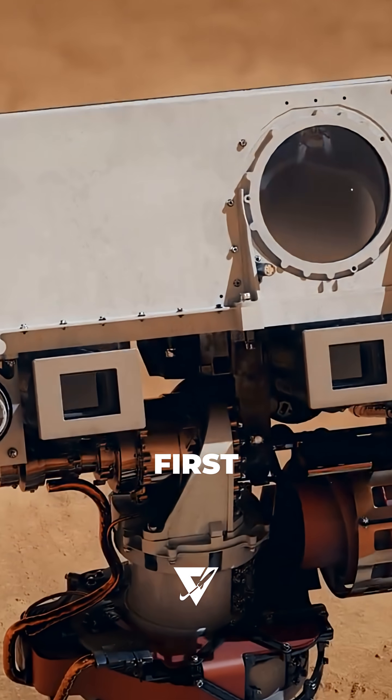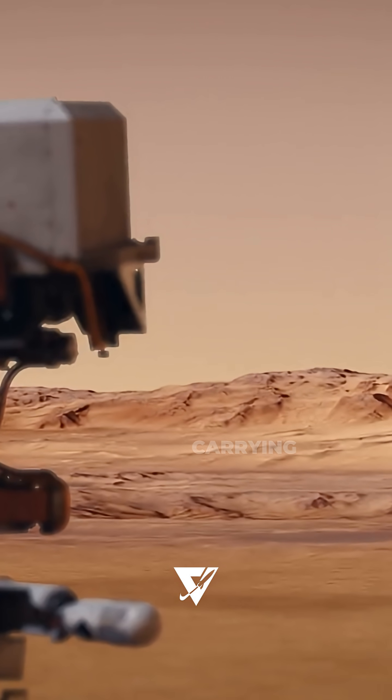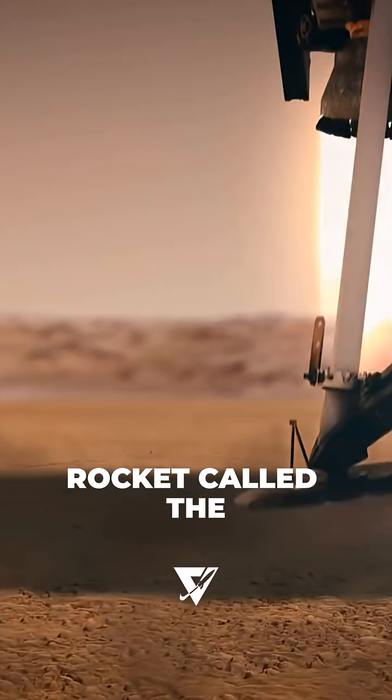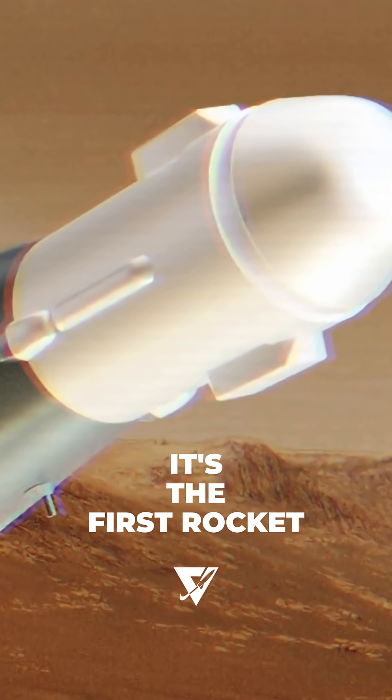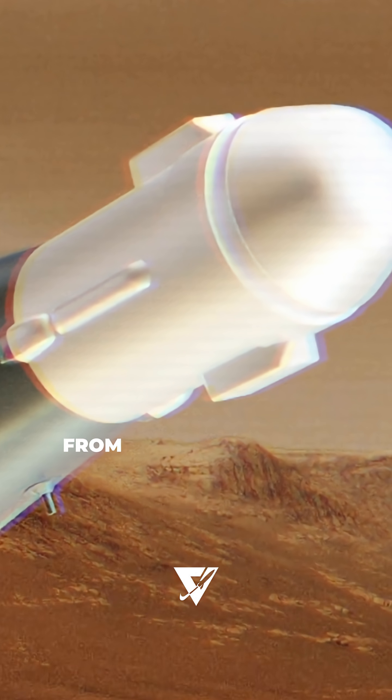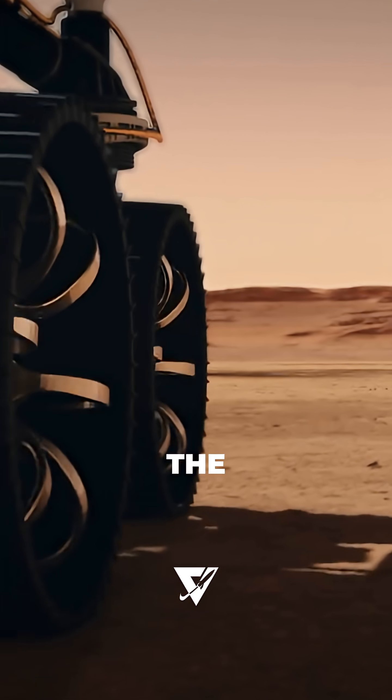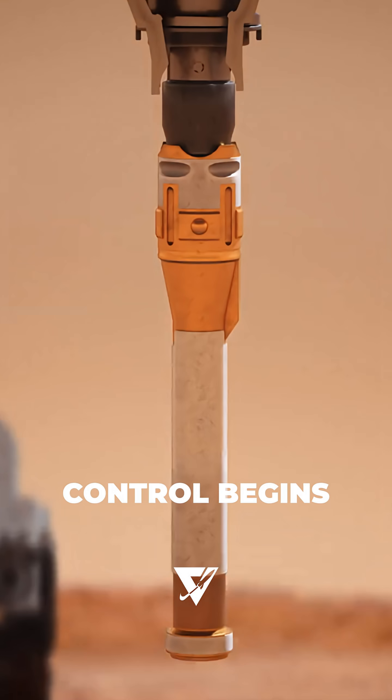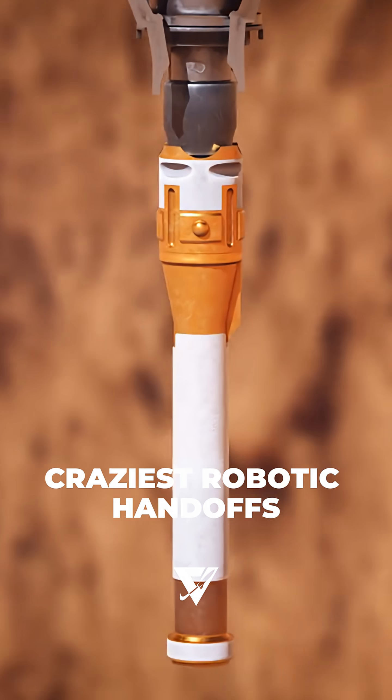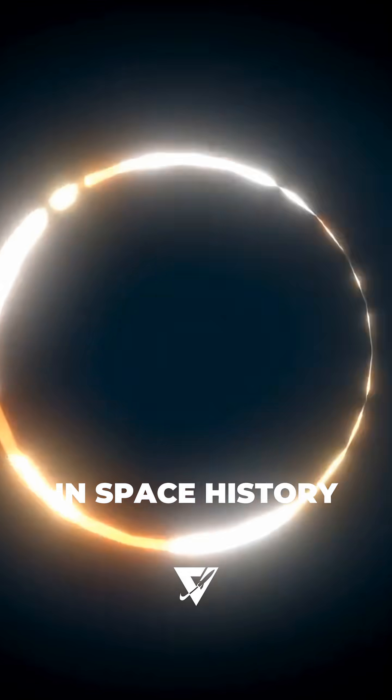NASA's plan is bold. First, a lander touches down near Perseverance, carrying a tiny rocket called the Mars Ascent Vehicle. It's the first rocket ever designed to launch from another planet. The rover drives over, hands off the tubes, and Mission Control begins one of the craziest robotic handoffs in space history.